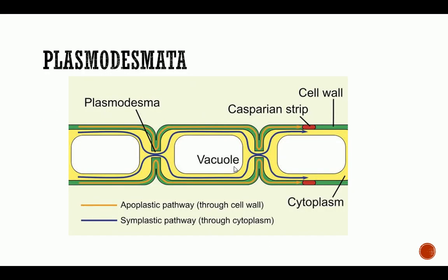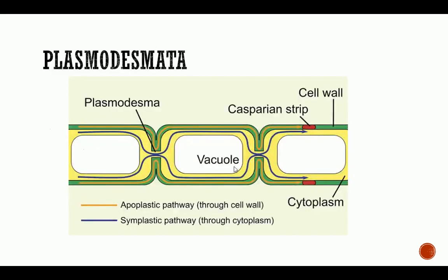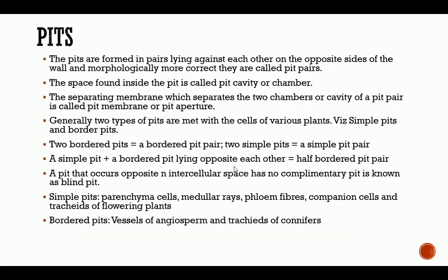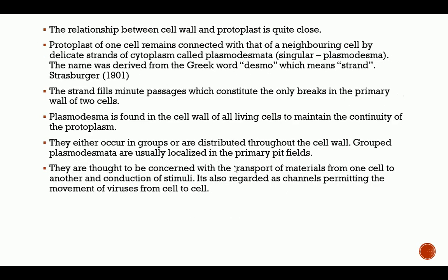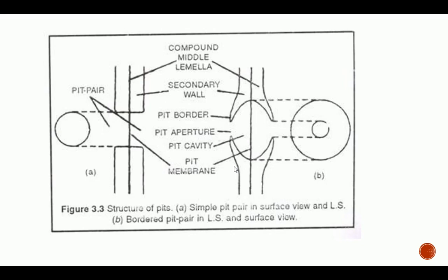That is the end of lecture five. We looked at plasmodesmata. Kindly study these images, understand how they are constructed, and research further. What you have here are the basic things you need to understand what plasmodesmata and pits are. The subsequent lecture will look at a series of organelles ranging from the nucleus and so on. Thank you for your time, thank you for being a part of this lecture series, and see you next time.